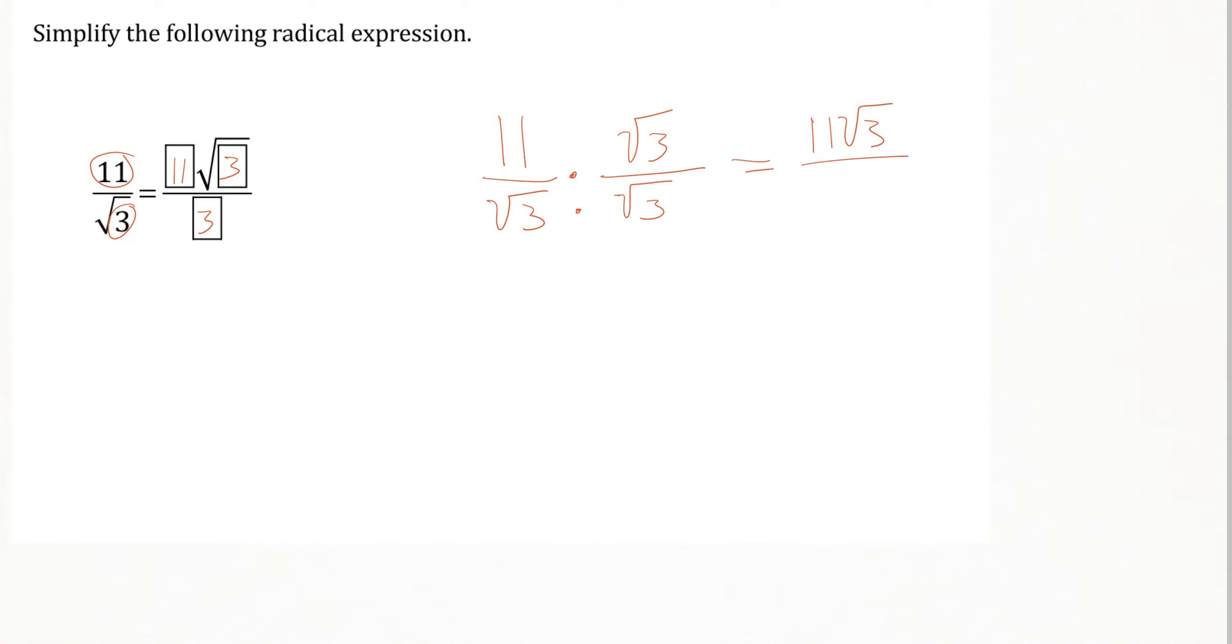And then on the bottom, when I multiply square root of 3 by the square root of 3, that's really the same as the square root of 3 squared, and squares and square roots cancel each other out, and so the bottom of the fraction would have just been a 3.